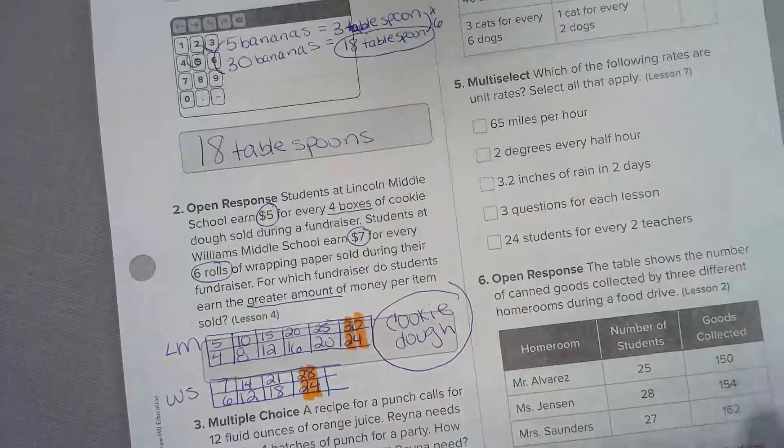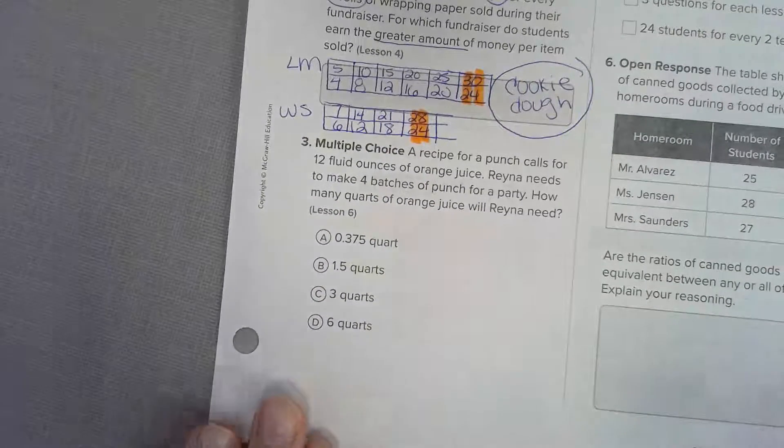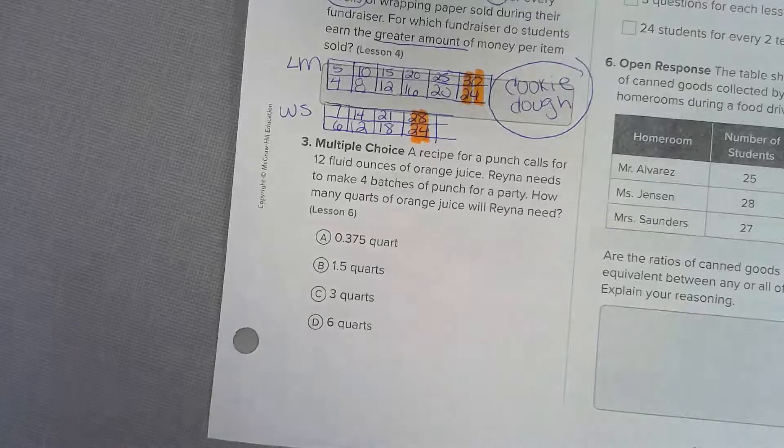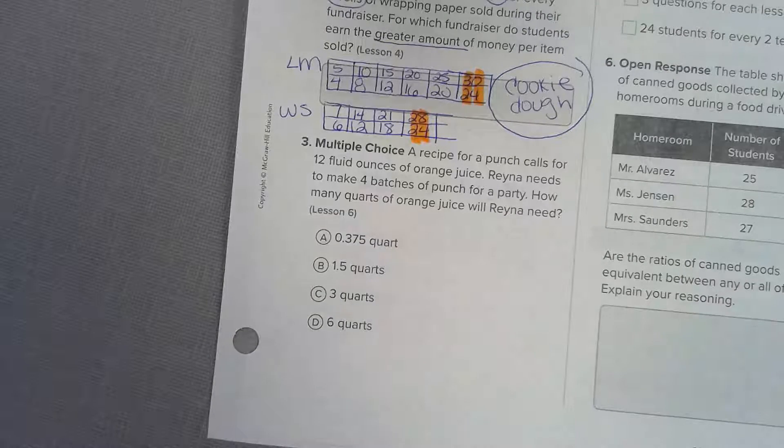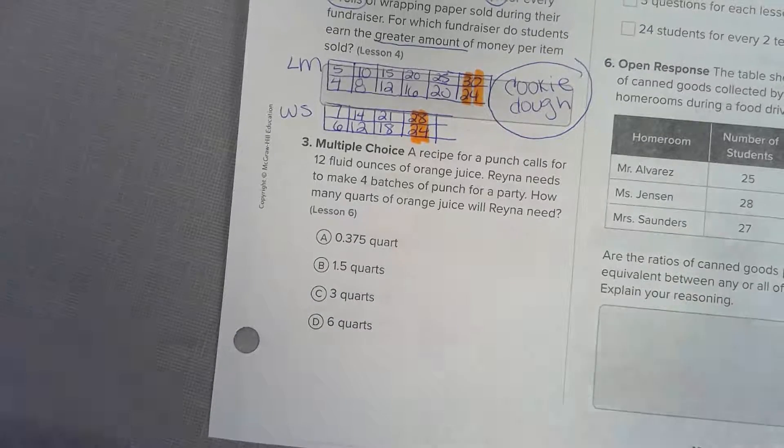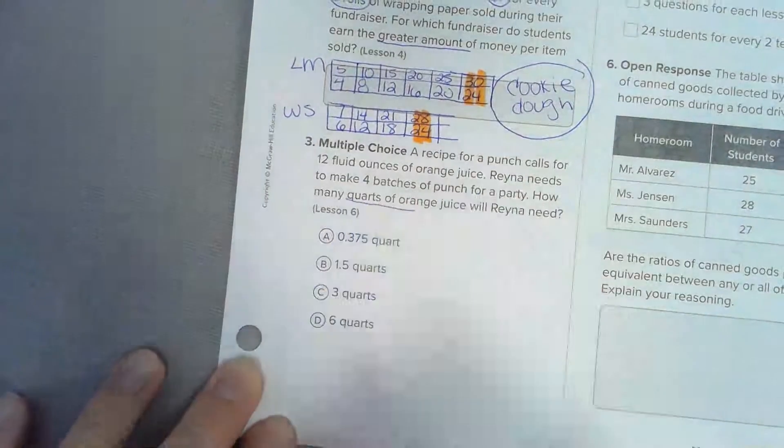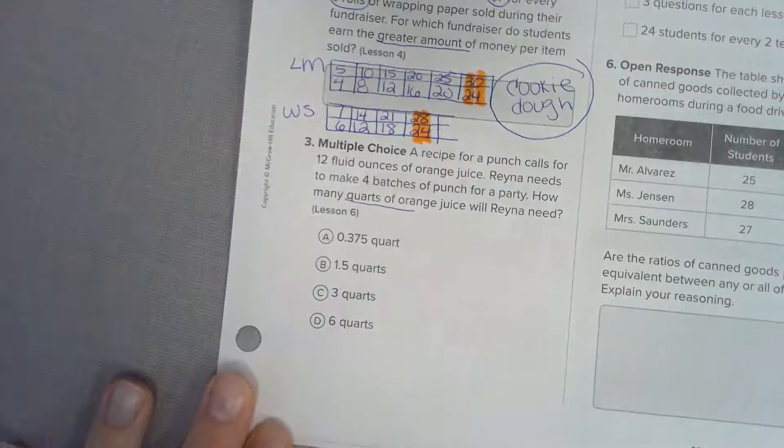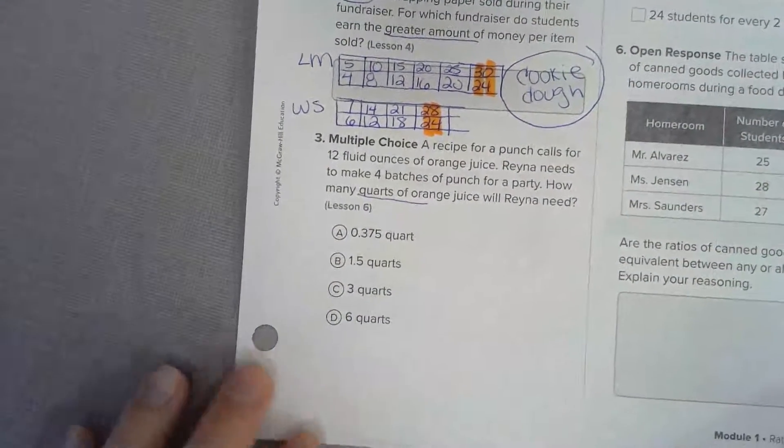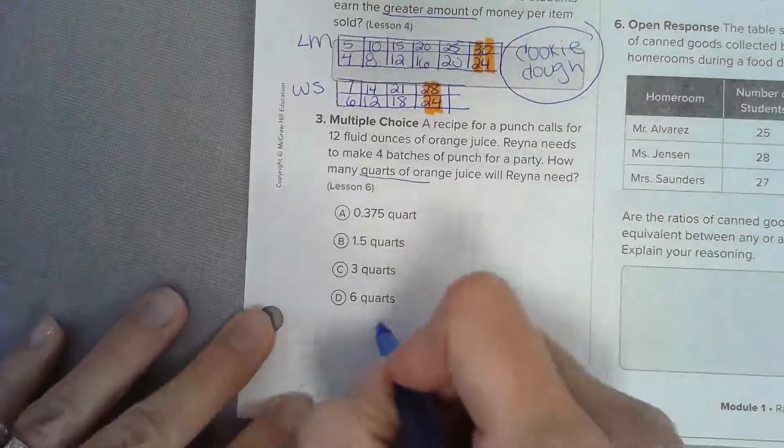Number three: a recipe for punch calls for twelve fluid ounces of orange juice. Raina wants to make four batches of the punch for a party. How many quarts of orange juice is she going to need? For this one I like drawing out our picture of quarts.